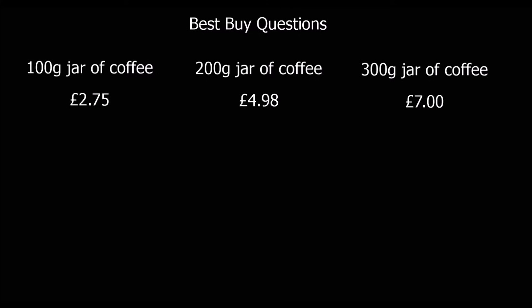In order to work out which offer is best value for money, you have to make things the same. There are two ways of doing this. You can make the amount of coffee the same by multiplying it — so times 100 by 6, 200 by 3, and 300 by 2 to make them all 600 grams. But the way they do it in the shops is the price per gram or the price per 10 grams.